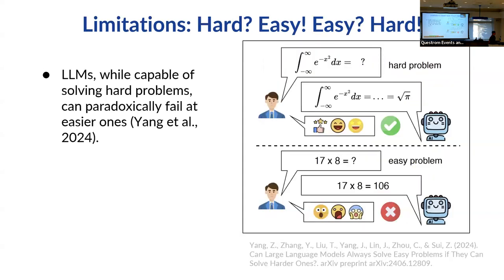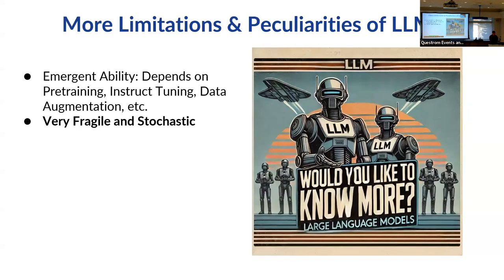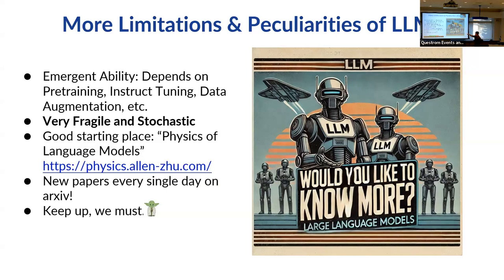What's hard for us may not be hard for LLMs, and vice versa. We're still at the very beginning stage of collecting empirical evidence — not even at the theoretical stage yet. A lot of emergent abilities depend on pre-training, instruction tuning, and data augmentation, and some results show that certain abilities cannot even be obtained without the right pre-training data.